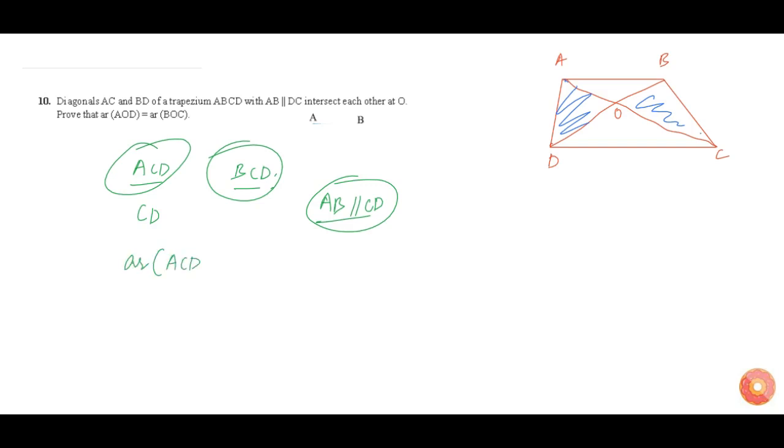Area of triangle ACD is equal to area of triangle BCD. Now let us see what is area of triangle ACD. Actually, area of triangle ACD is sum of area of triangle AOD and COD. Which means area of triangle ACD is equal to area of triangle AOD plus area of triangle COD.